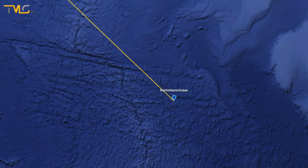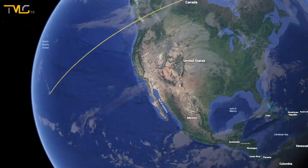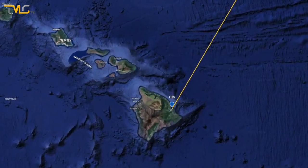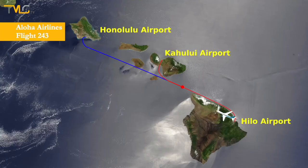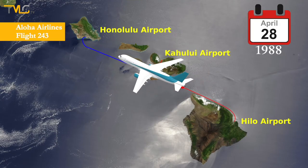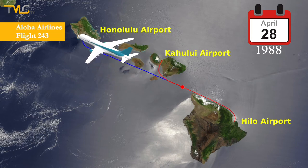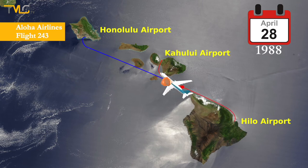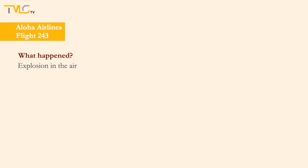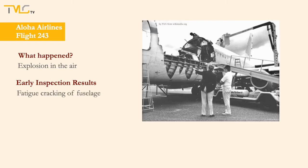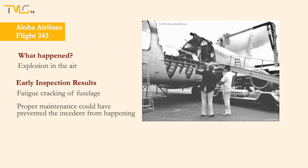For our next case, we sail from the northern Atlantic Ocean to the northern Pacific Ocean. An accident took place on a plane scheduled to fly from Hilo to Honolulu in Hawaii on April 28, 1988. The pilots landed the plane safely; however, due to an explosion that occurred in the air, one flight attendant was fatally injured and some passengers had serious injuries. Investigations showed that the accident was due to fatigue cracking of the fuselage, though proper inspection and maintenance could have prevented this accident.